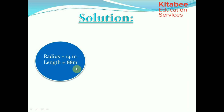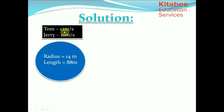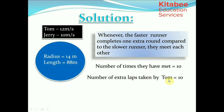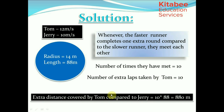Solution: Radius is 14 meters, so the length of the track is 2πr = 2 × (22/7) × 14 = 88 meters. Tom's speed is 12 m/s and Jerry's is 10 m/s. Since they run in the same direction, every time they meet, the faster runner completes one extra lap compared to the slower. They have met 10 times, so Tom has completed 10 extra laps. The extra distance traveled by Tom is 10 × 88 = 880 meters.